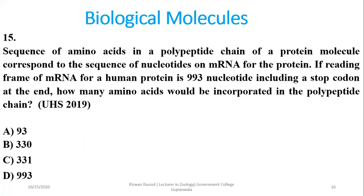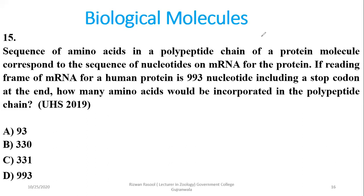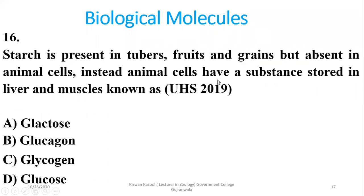Question 15: The sequence of amino acids in a polypeptide chain of a protein corresponds to the sequence of nucleotides in messenger RNA. If the reading frame of mRNA has 993 nucleotides including a stop codon, excluding the stop codon leaves 990 nucleotides. Dividing by 3 gives 330 amino acids incorporated into the polypeptide chain — beta is the right answer.